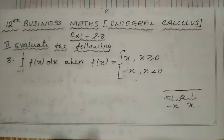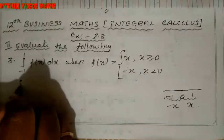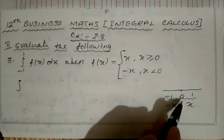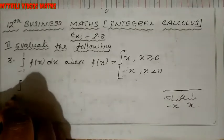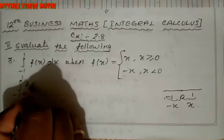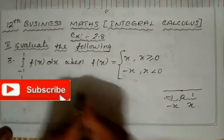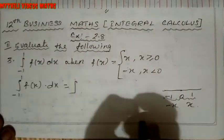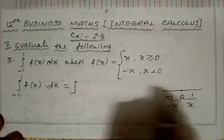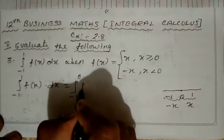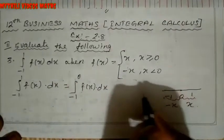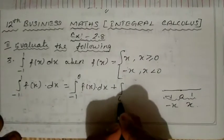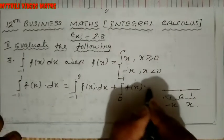Now we will solve the sum. We write: integral from -1 to 1 of f(x) dx. First, we split the interval and write: the first part is integral from -1 to 0 of f(x) dx.